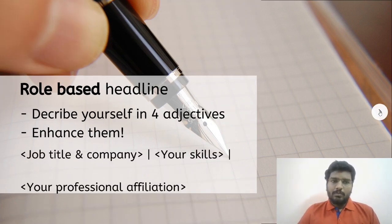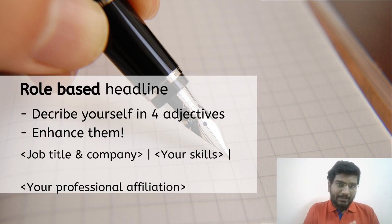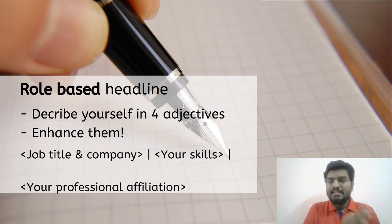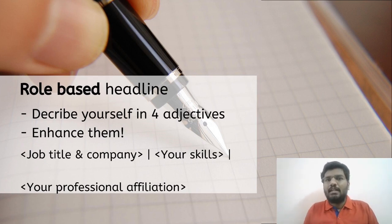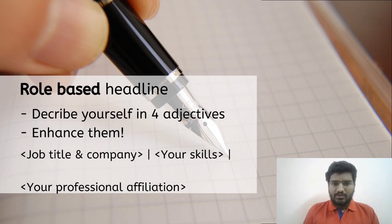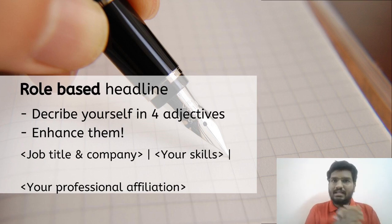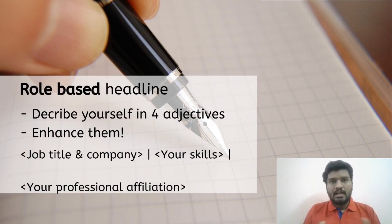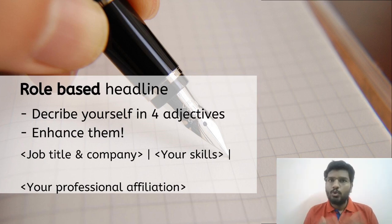A typical example would be adding your job title and your company name — this is quite important for people to know which company you're working in and what your title is. The second is to add some of your top skills and make it more interesting. For example, if one of your skills is content writing or blogging, you can write yourself as a blogger. The third is your professional affiliation. If you are part of any professional body, you can write them as well. If you are taking up any volunteer role, please do add them as part of your headline — that will give a good impression when someone visits your profile for the first time.